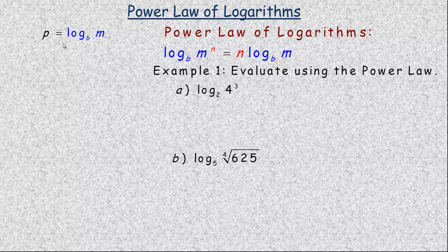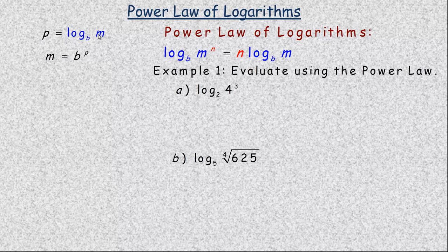To prove that, we have p equals the logarithm base b of m — just a logarithmic statement — and we're going to convert that into its equivalent exponential form. The equivalent exponential form says that b, the base, raised to the power of p, so b to the power of p, is equal to m.